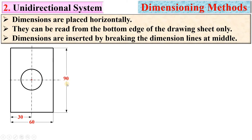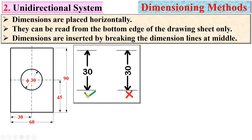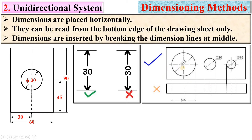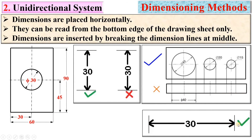Similarly, for a vertical dimension in the unidirectional system, keep in mind the dimension must be read from the bottom of the drawing only. For a circle, the dimension can be given as phi or as radius R. The correct method per the unidirectional system shows all dimensions readable from the bottom; placing a dimension readable only from the right side is incorrect.